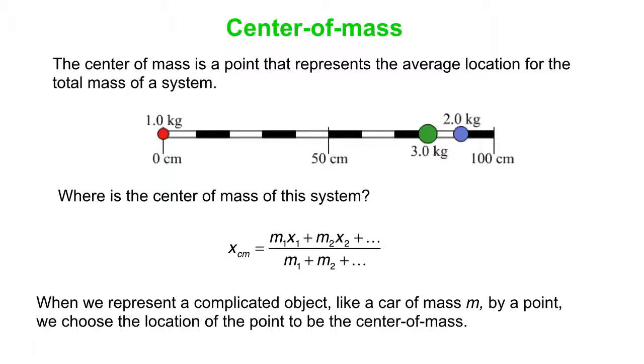So when we represent a complicated object like a car of mass m by a single point, then we choose the location of that point to be the center of mass.